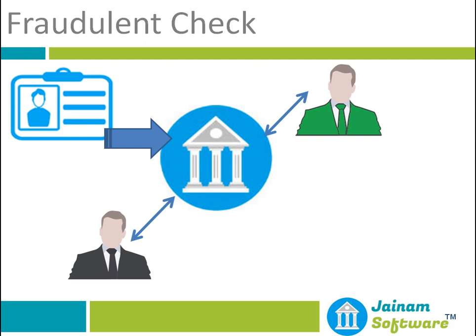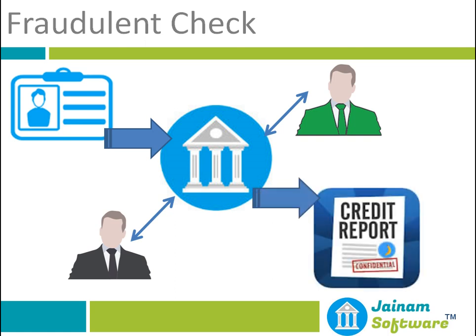I'll also explain how the network works in terms of how many financers are involved. The third but very important check is the credit report. Using a third-party credit agency, JNM software makes it possible for a financer to check the credit score and credit history of a borrower. These are three very important points in JNM software which help to do a fraudulent check of the customer.